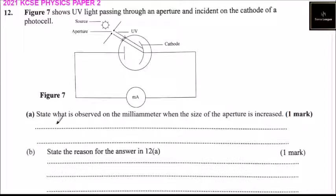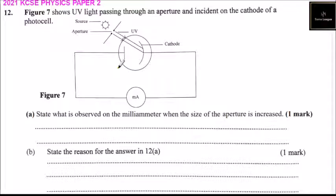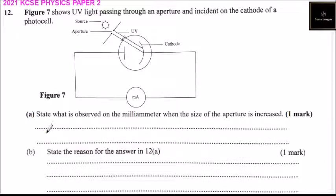Part A: State what is observed on the millimeter when the size of the aperture is increased. When the aperture is increased, it means more UV light will be able to penetrate or be illuminated on the cathode. Therefore, the cathode will emit more electrons, which will be received by the anode. As a result of an increase in the flow of electrons, there is more current, and therefore the millimeter hand will deflect.